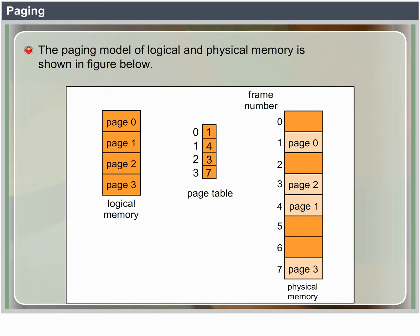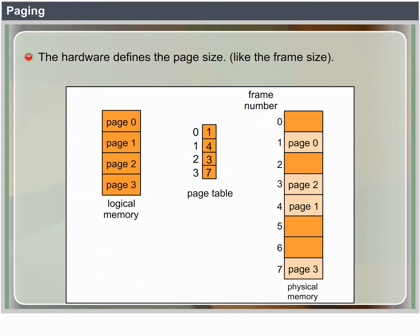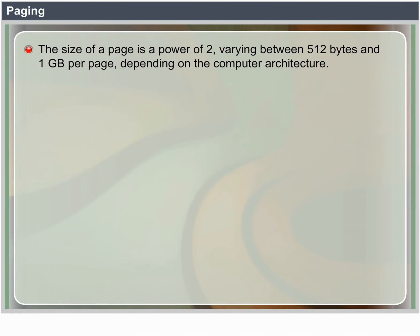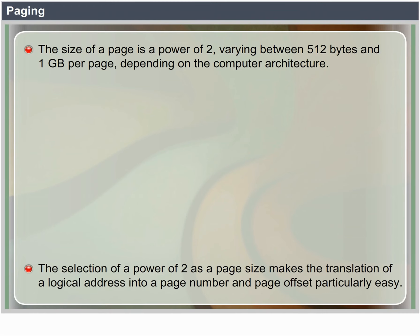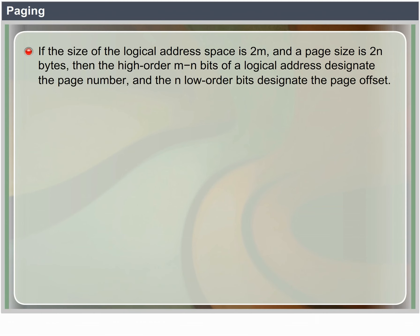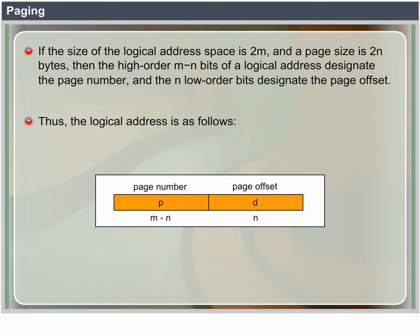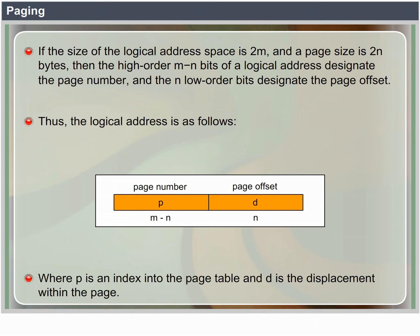The page number is used as an index into a page table. The page table contains the base address of each page in physical memory. This base address is combined with the page offset to define the physical memory address sent to the memory unit. The page size, like the frame size, is defined by the hardware. The size of a page is a power of 2, varying between 512 bytes and 1 GB per page depending on the computer architecture. If the size of the logical address space is 2^M and a page size is 2^N bytes, then the higher-order M-N bits of a logical address designate the page number and the N low-order bits designate the page offset.